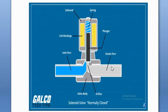There are two types, just like the relay. A relay is normally closed and normally open — the same here: solenoid valves are also available in normally closed and normally open configurations.